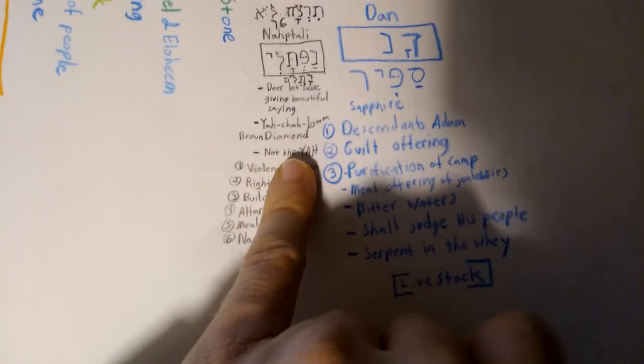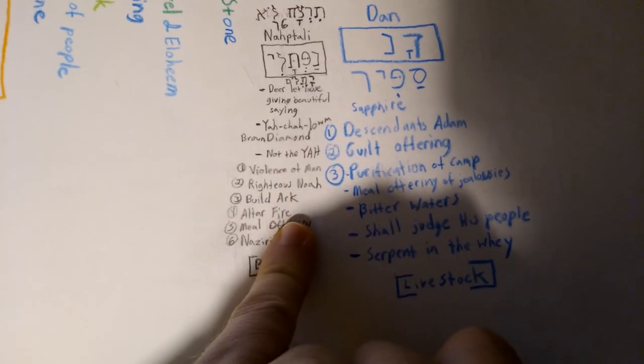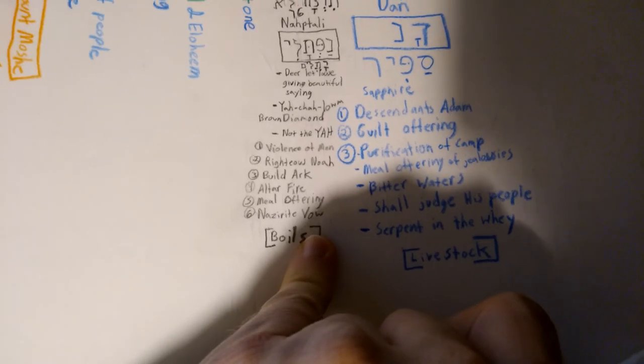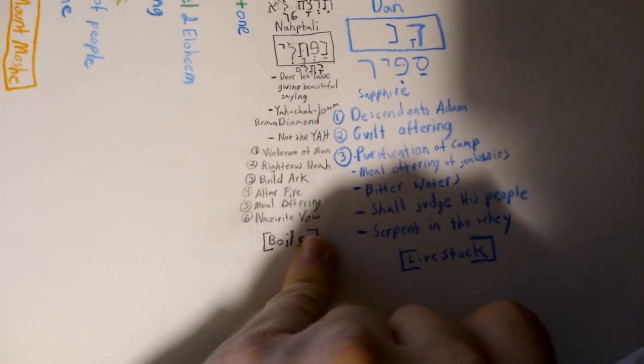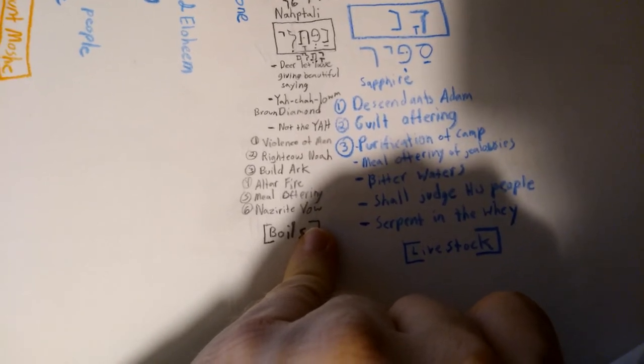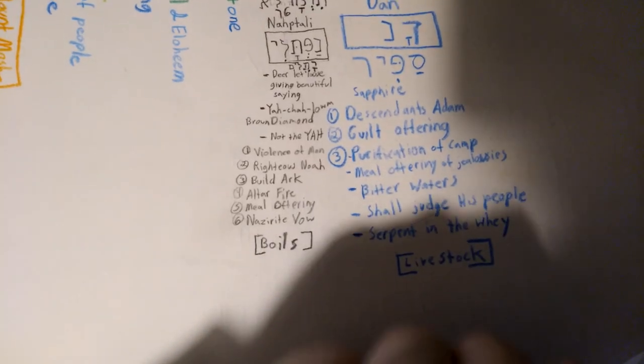Brown diamond, somewhat like that. Not the violence of man, righteous of Noah, built an ark, the fire, the meal offering, the Nazarite vow, and the boils.